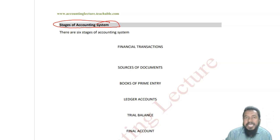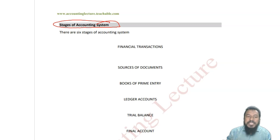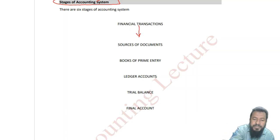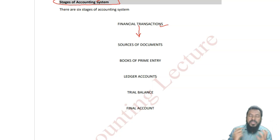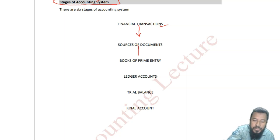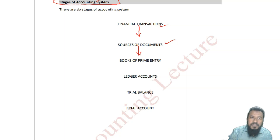Let's assume you're working in an accounting department. What do you do in that department? At first, some financial transactions need to take place in your organization. Those transactions need to be documented. For example, you sold or purchased. So against those transactions, there should be some sources of documents. We call it sales invoice, purchase invoice.